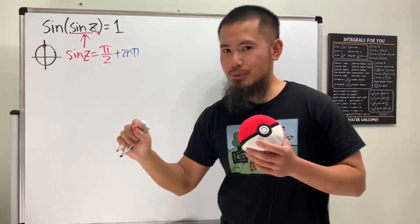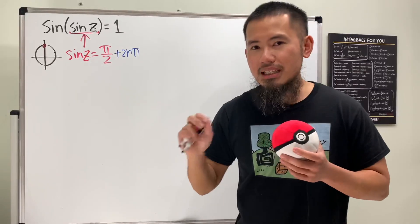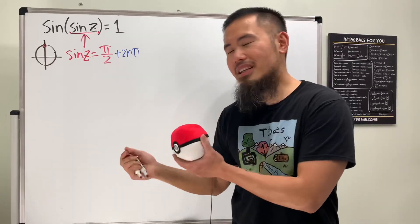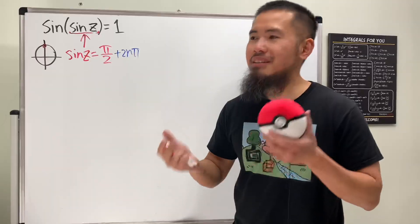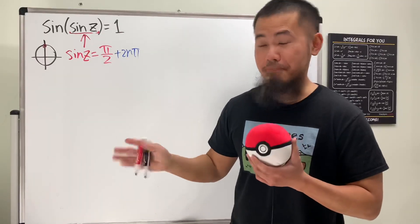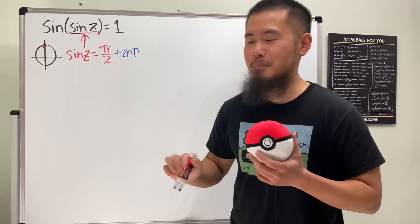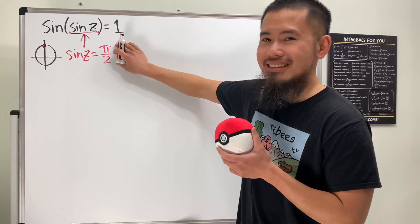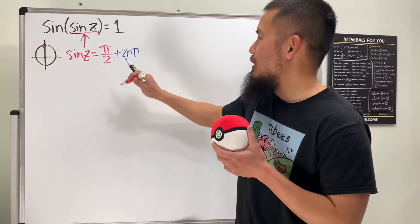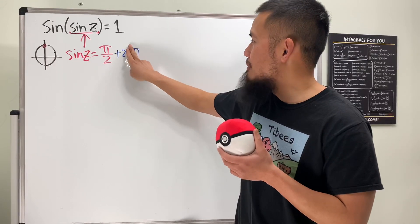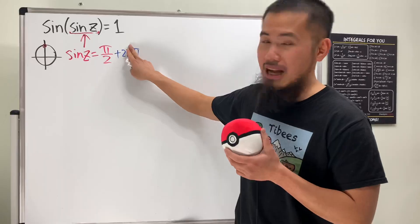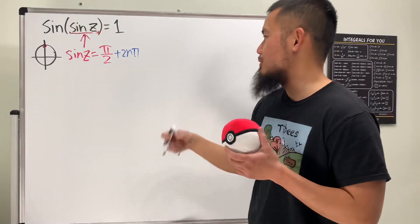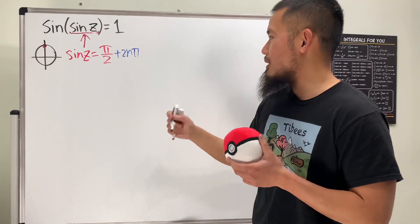For each of those infinitely many equations, you get infinitely many complex solutions. So just imagine: you have infinitely many complex numbers for each case. Of course, I'm just going to show how those solutions are derived.